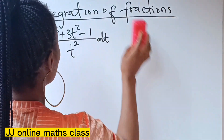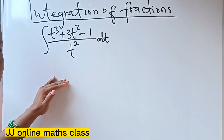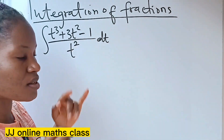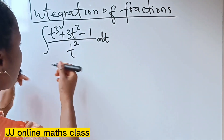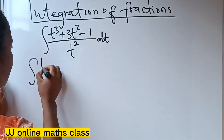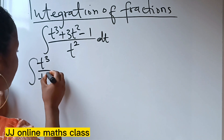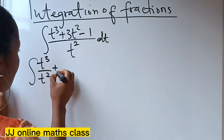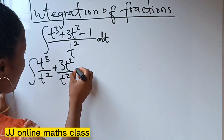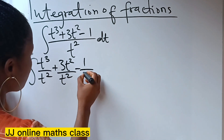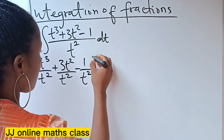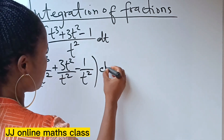If you have a fraction and you want to integrate it, I will advise you first of all to simplify it this way. This particular fraction can be simplified further as 2 over t-squared, plus 3t-squared divided by t-squared, minus 1 divided by t-squared — everything dt.